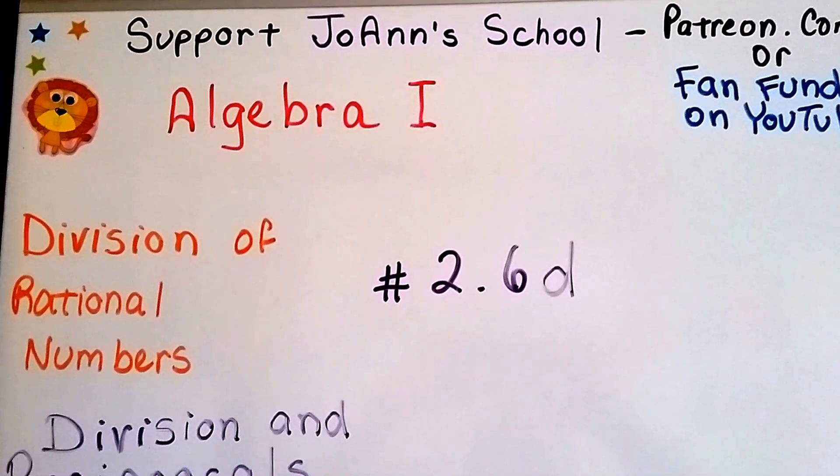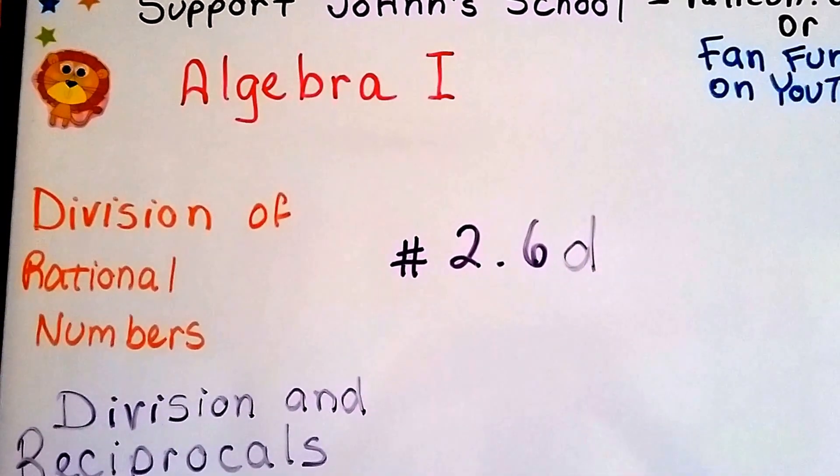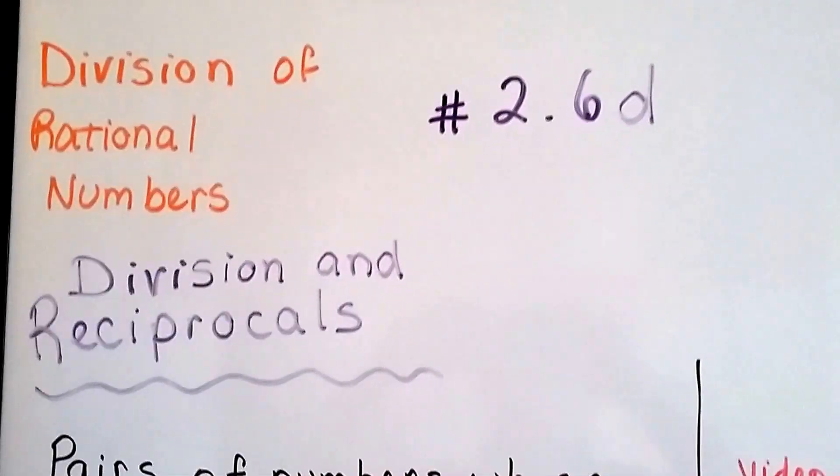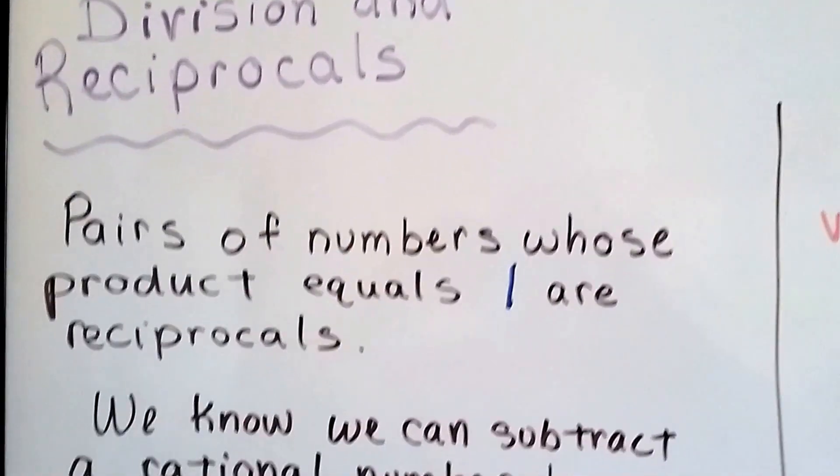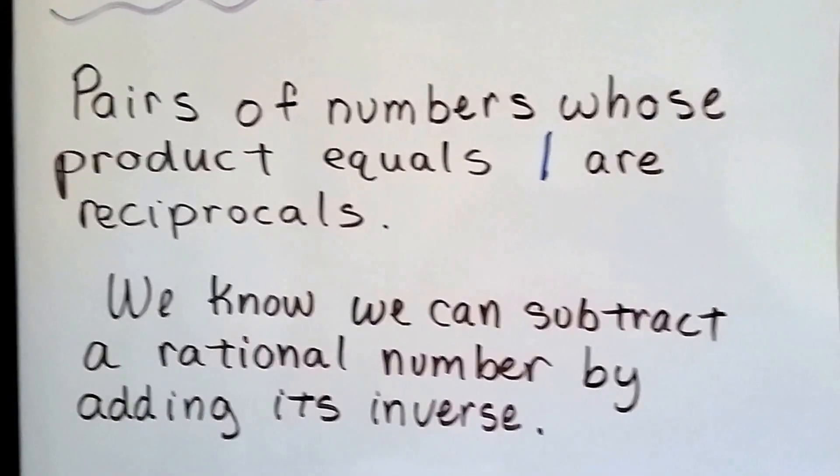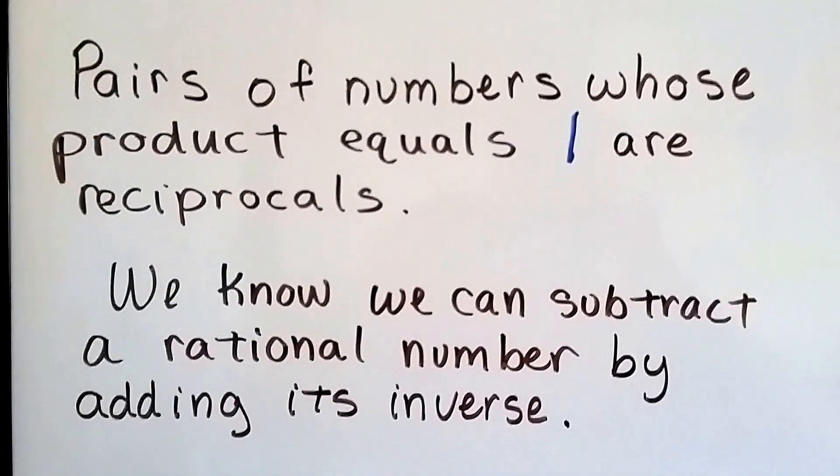We're talking about division of rational numbers in this unit, Algebra 1, number 2.6d. This is division and reciprocals. Pairs of numbers whose product equals 1 are reciprocals. We learned that in the last video.